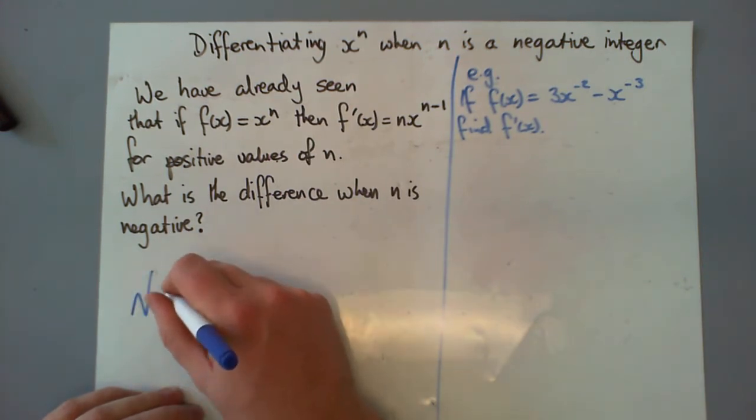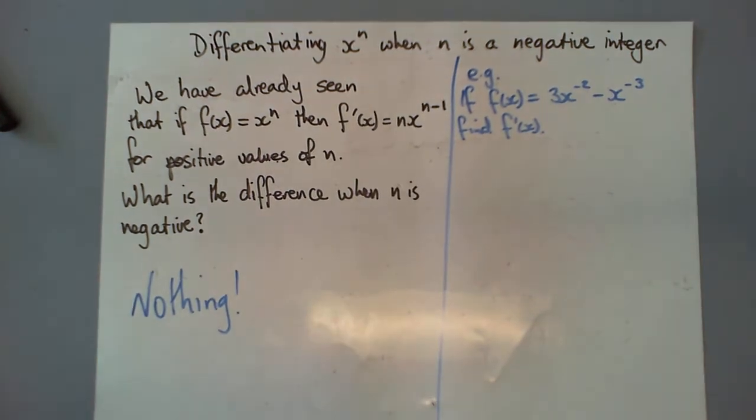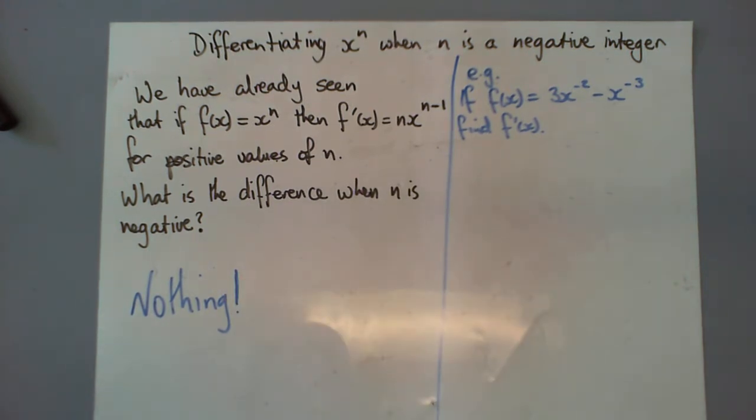What's the answer to that? What's different? Nothing. We do exactly the same process. You don't have to worry about anything really particularly new in this section. We're just looking at what happens when it's negative and our same rules apply.